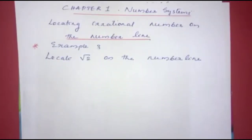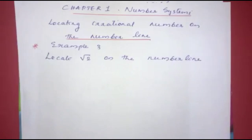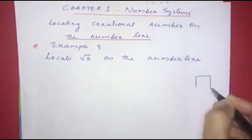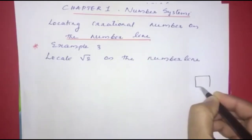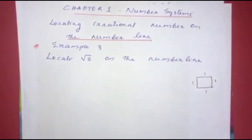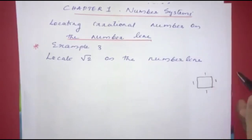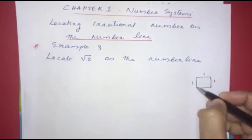Example 3: locate root 2 on the number line. Now let's start. We can write a length of root 2. If we want to write it on the number line, we consider the square of root 2. We consider a square of 1 unit. If we consider a square of 1 unit, then it has a diagonal — it is not just a square.